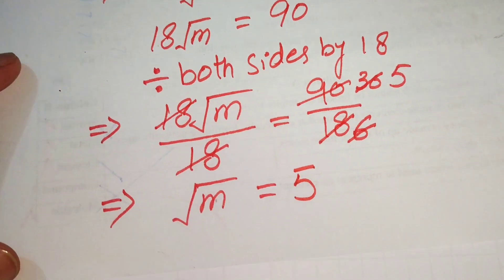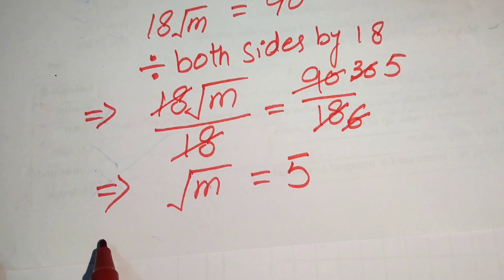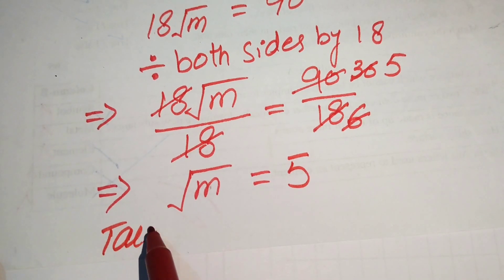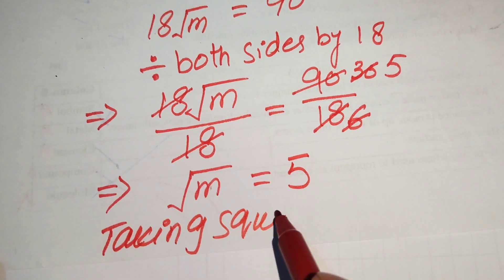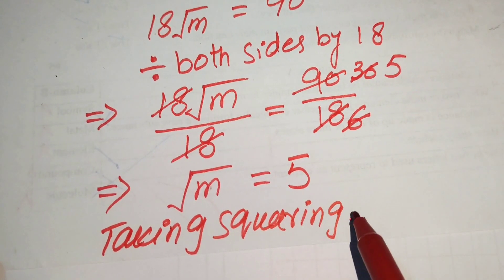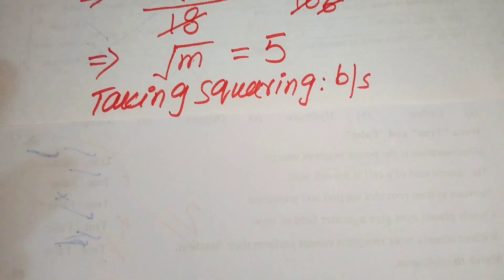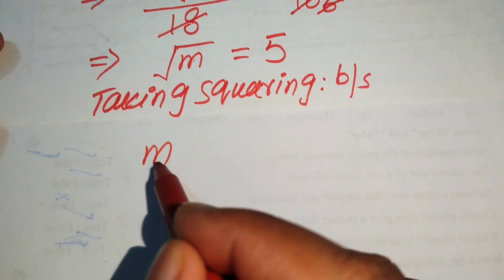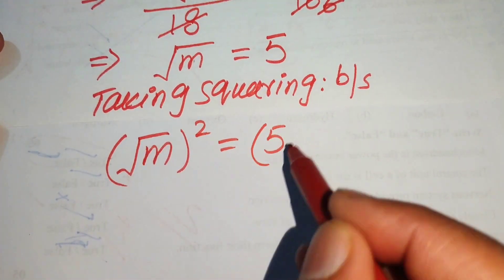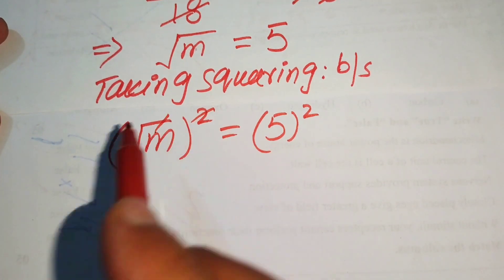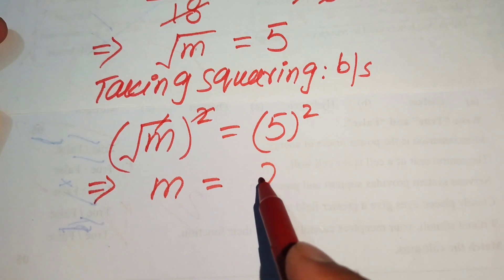Because we are solving for the values of m, we need to eliminate this square root, so we again take squaring on both sides. When we square both sides it is written as: square root of m whole squared equals 5 squared. The square and square root cancel and we get m equals 25.